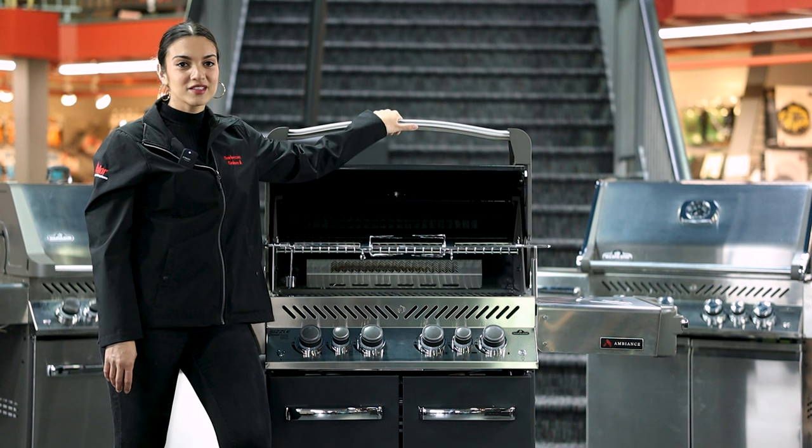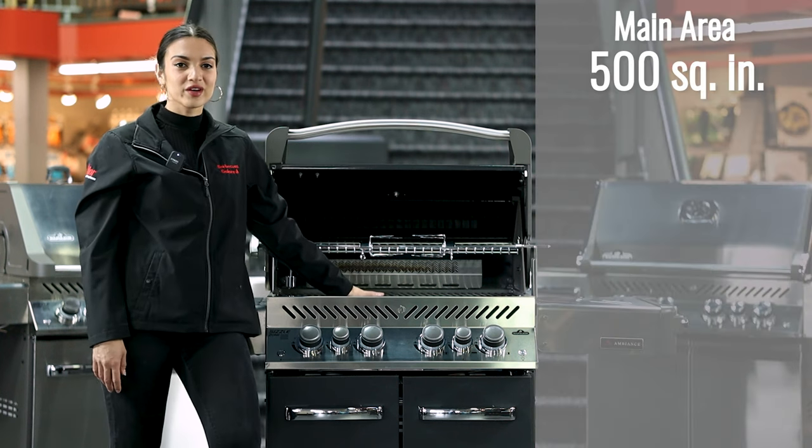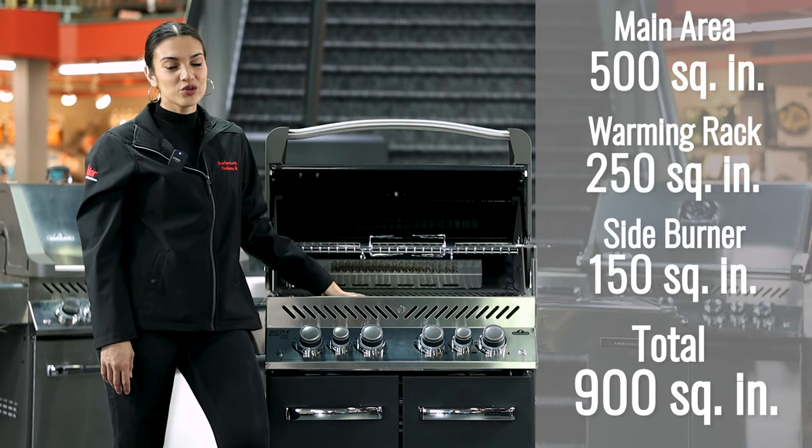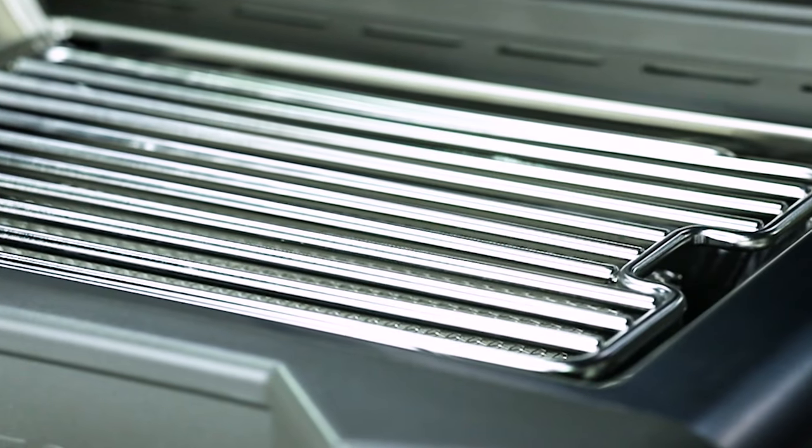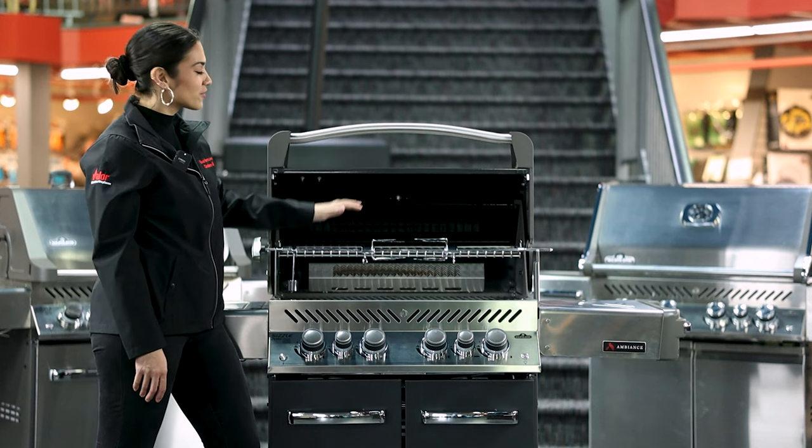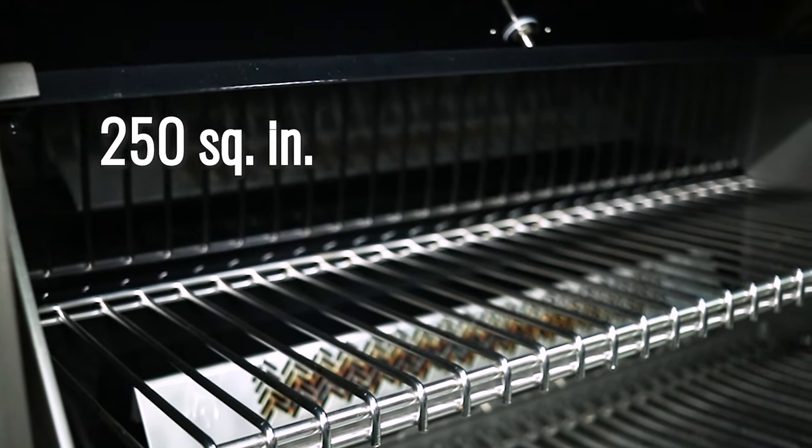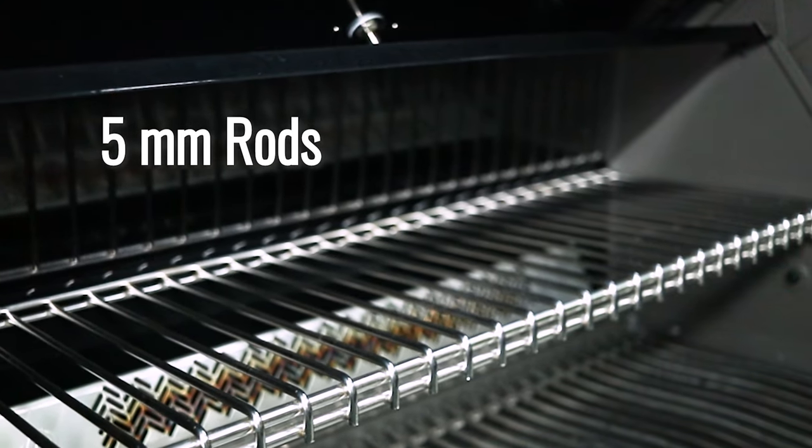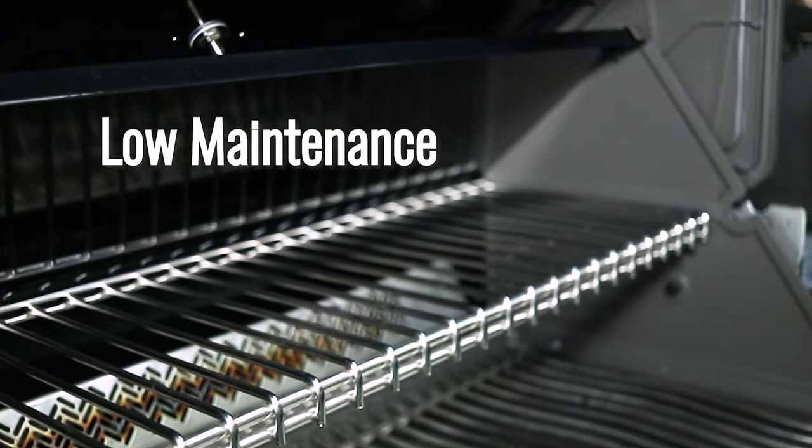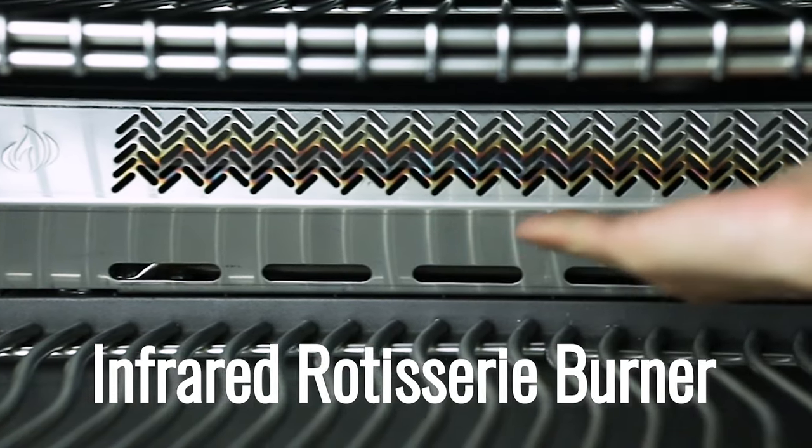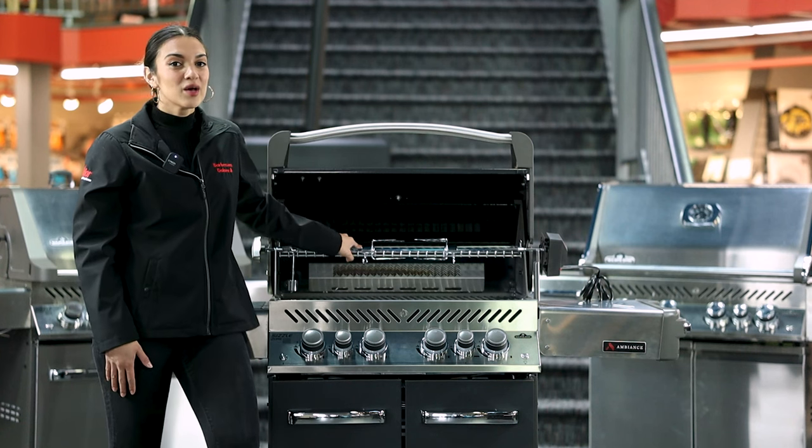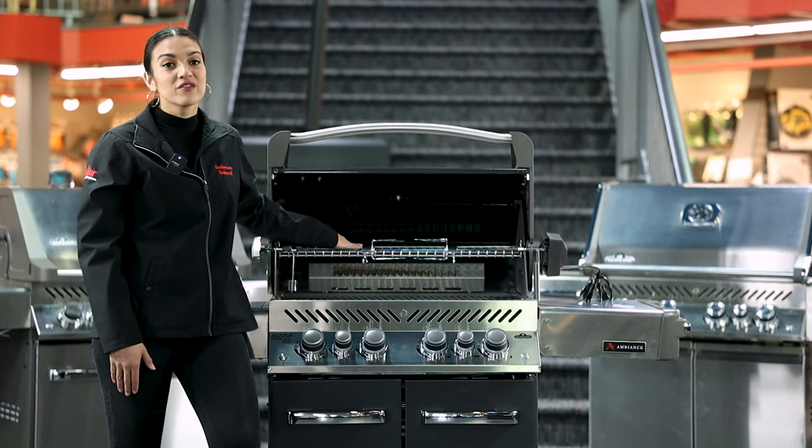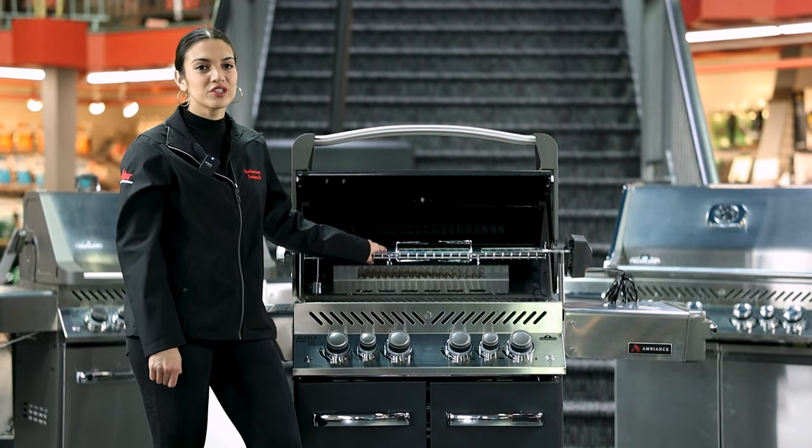For cooking space, this barbecue features 500 square inches of cooking area and a total of 900 square inches, including the stainless steel warming rack and the side burner. Once you've opened up the Napoleon Ambiance, the first thing you see is the stainless steel warming rack, which is an excellent space to put foods that are already done cooking and you just want to keep warm until company is over. Behind the warming rack is an infrared burner. Later on in the video, we're going to talk about what infrared is, but for now, you just need to know it gets very, very hot.